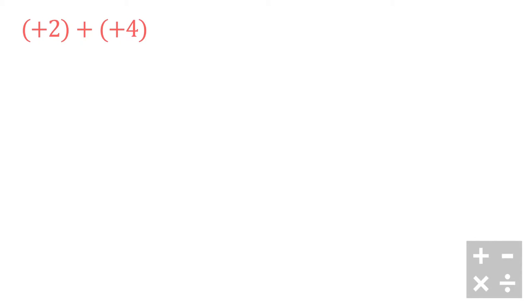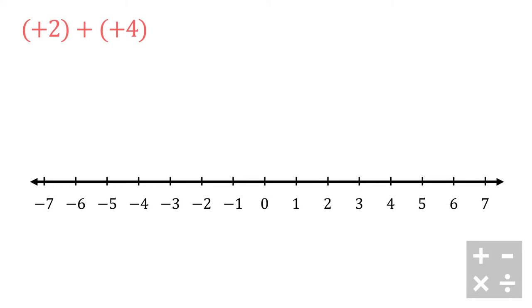For my first example, we're going to look at positive two plus positive four. Whenever I do integer addition using a number line, I always start at zero, right in the middle. To represent positive two, I'm going to draw a line from zero going positive two spaces.